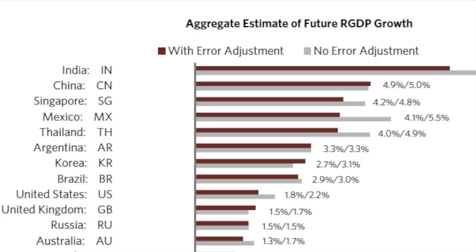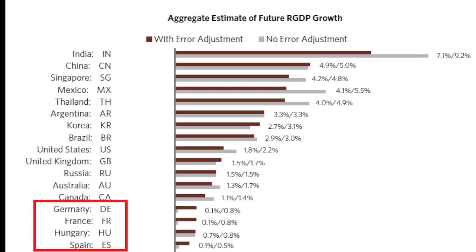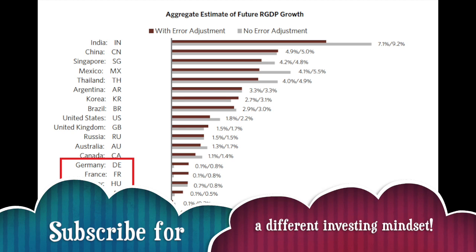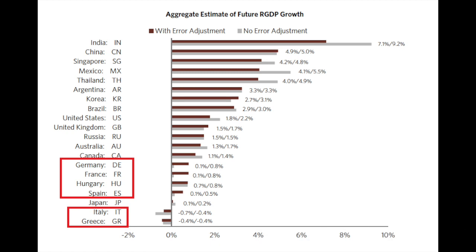They have also made an outlook for Europe and their estimate for real future GDP growth. I have highlighted Europe in the table. Europe shows 0% to 0.8% max. You see Germany, France, Hungary, Spain, Italy, and Greece, which are the countries they have taken into account. Compare Europe to the rest of the world and you can really see that Europe is the bag holder of the world and there is nothing we can do to avoid this.